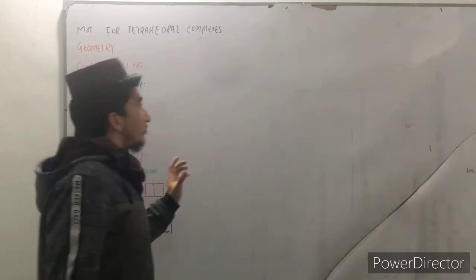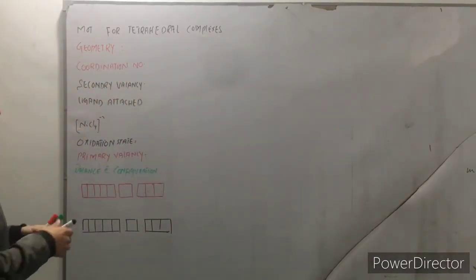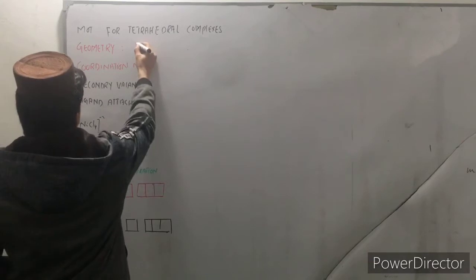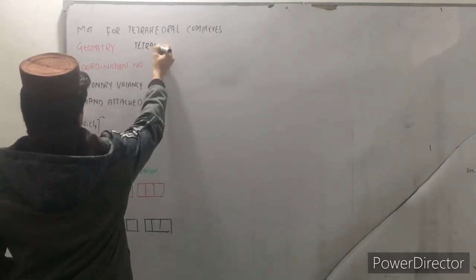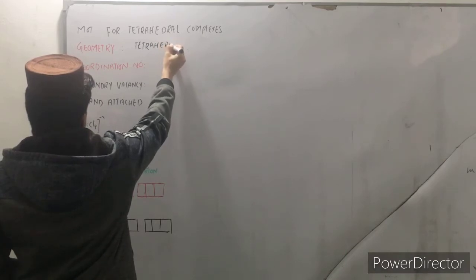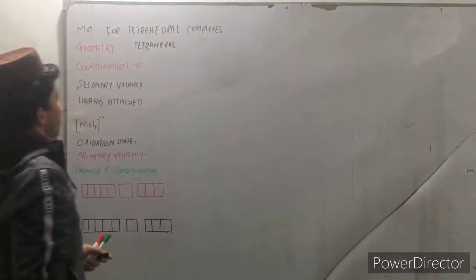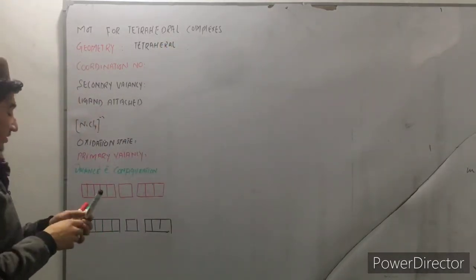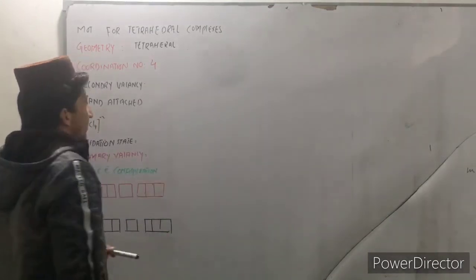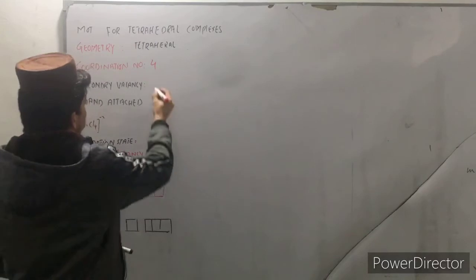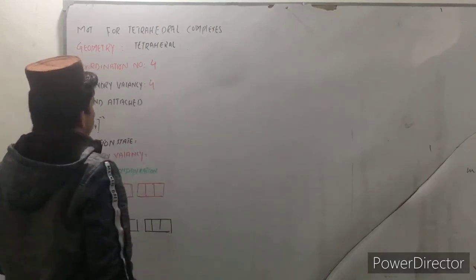Moving on to our topic, in tetrahedral complexes the geometry is tetrahedral as can be considered from this name. The coordination number in these complexes is four and the secondary valency is also four because the coordination number and secondary valency are related.